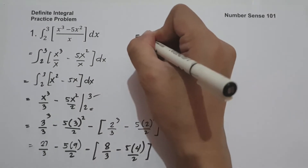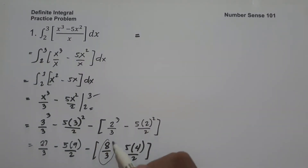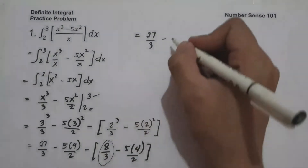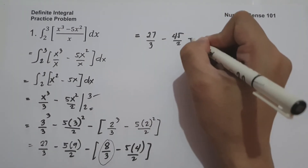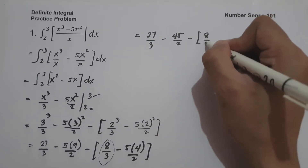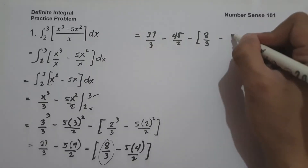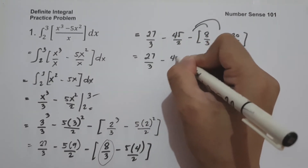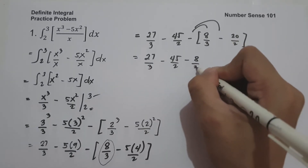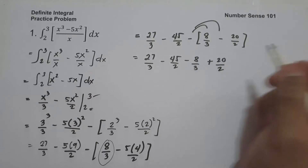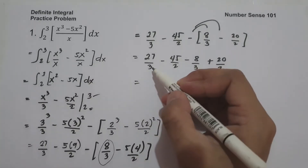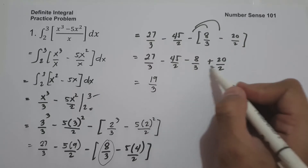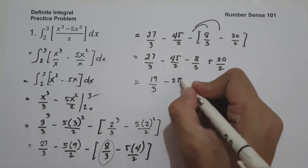Let us simplify. 3 cubed is 27 over 3, minus 5 times 9 which is 45 over 2, minus 8 over 3, minus 5 times 4 which is 20 over 2. Distributing the negative sign gives us 27 over 3 minus 45 over 2 minus 8 over 3, and negative times negative gives positive 20 over 2. Combining the fractions with 2 in the denominator: negative 45 over 2 plus 20 over 2 is negative 25 over 2.